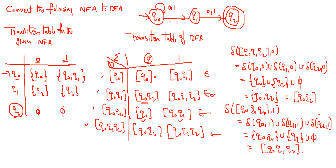The initial state is Q0. The states that contain Q2 — that is {Q0, Q2} and {Q0, Q1, Q2} — will become final states in the DFA, because Q2 is the final state in the NFA. So whatever states are linked with Q2, all those states will become final states.